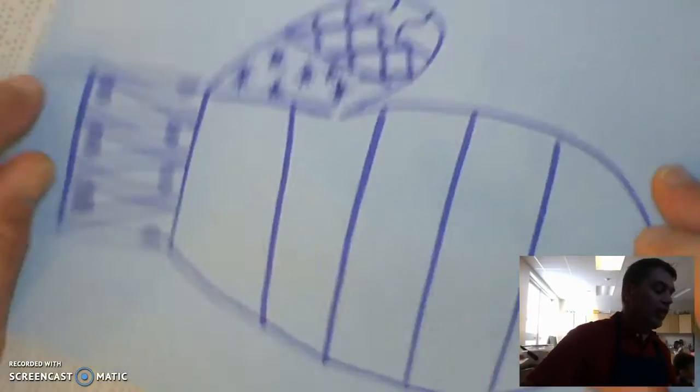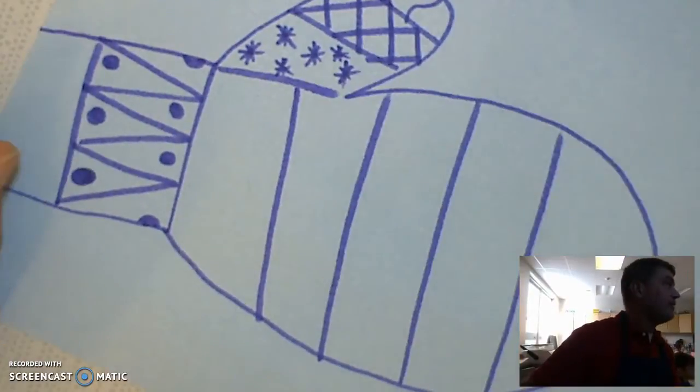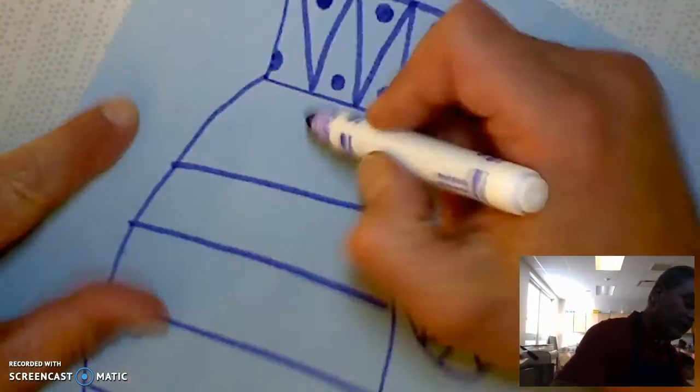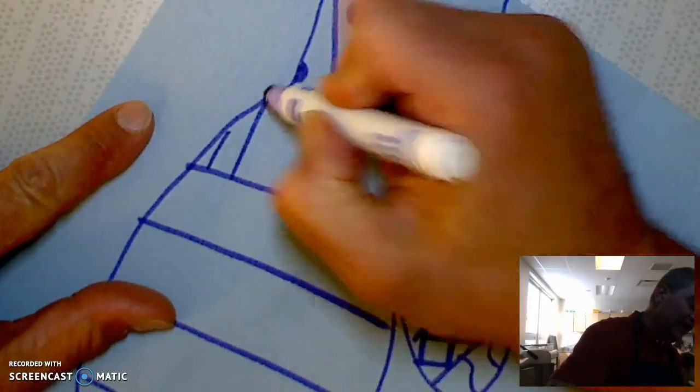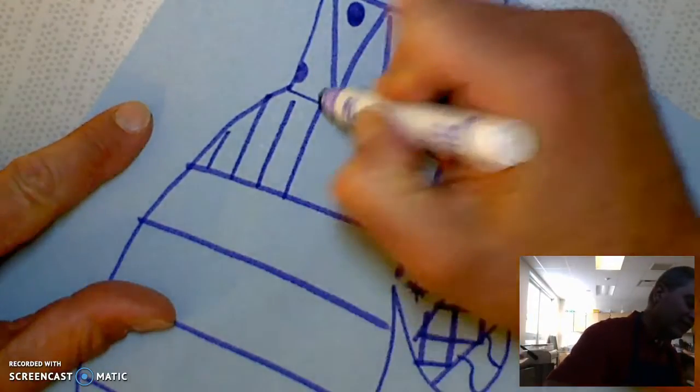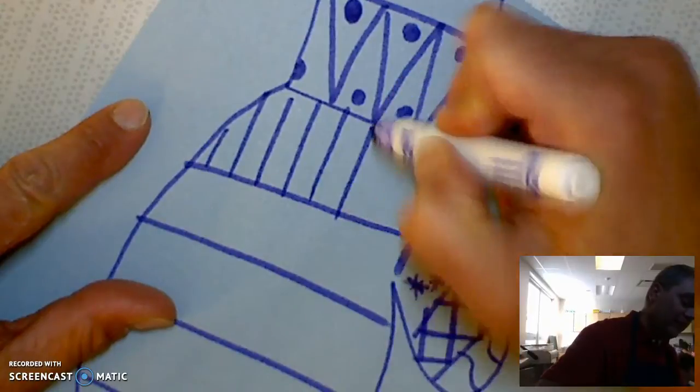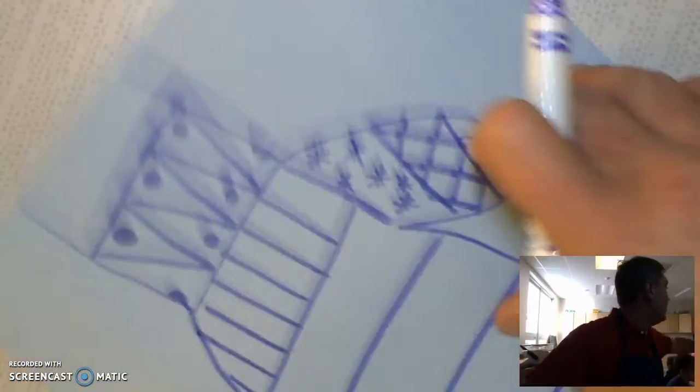So each one is going to have a different design in it. Maybe on this one I'll just do straight lines or horizontal lines, which are vertical because I've turned my paper the other direction. And then in the middle of it,